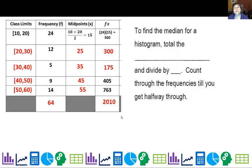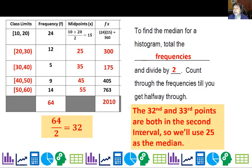By the way, to find the median on a histogram, total all the frequencies and divide by two to figure out where the middle point will be. Count through the frequencies till you get halfway through. Halfway is about point 32, 33, and both of these are going to be in the second interval. So we'll say our median is roughly 25, somewhere between 20 and 30.